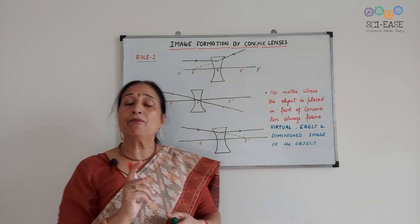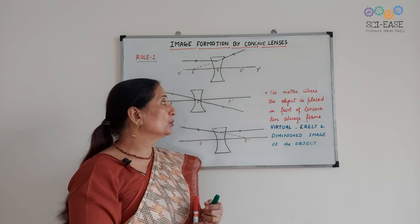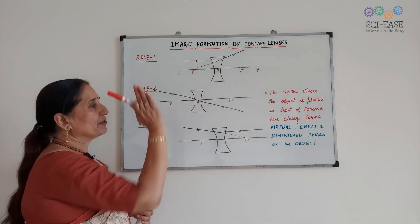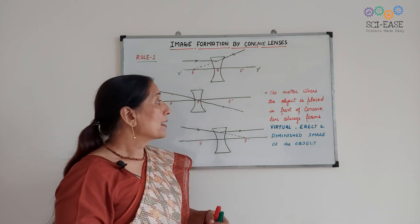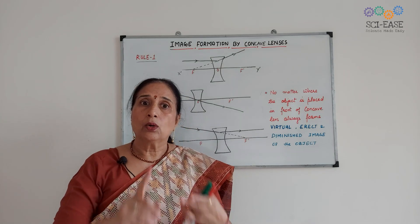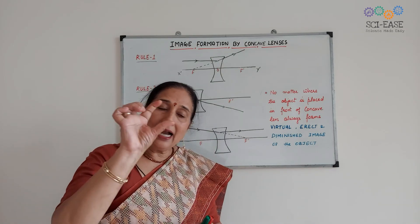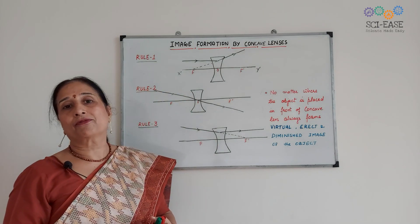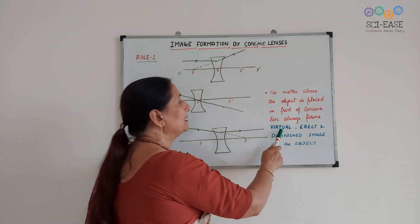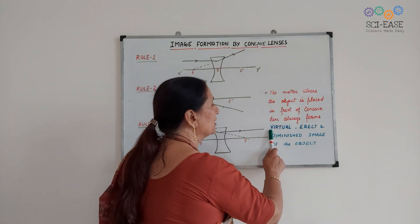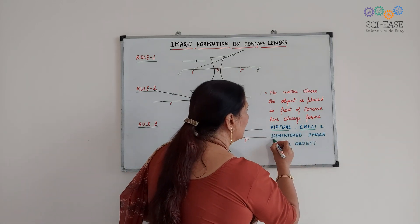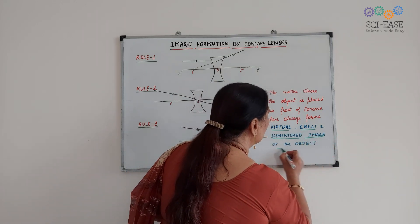Now one very important thing I want to tell you. No matter where the object is placed in front of the concave lens, the concave lens always forms a virtual, erect, and diminished image of the object. You must memorize this.